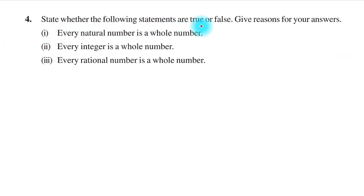Question 4: State whether the following statements are true or false. Give reasons for your answers. First statement: Every natural number is a whole number. Let me draw a number line. All natural numbers can be written as 1, 2, 3, and so on. Whole numbers are when you include zero here. The question asks if every natural number is a whole number. Definitely, this is true.